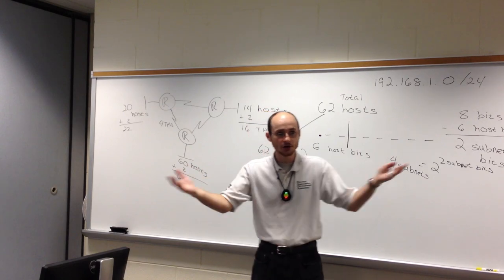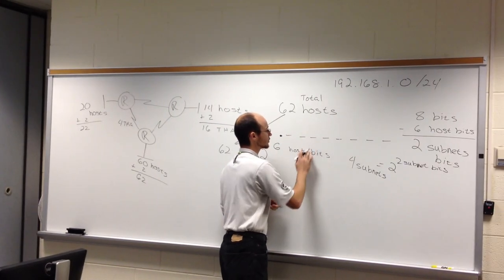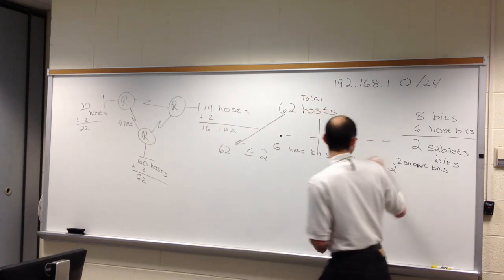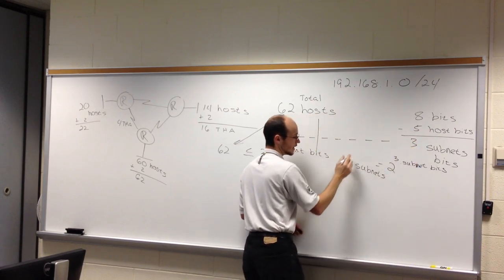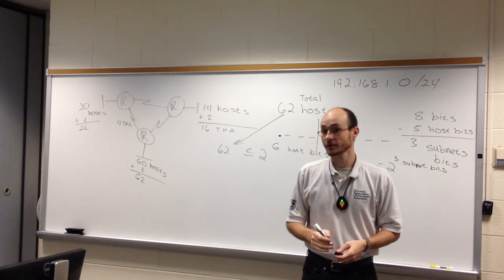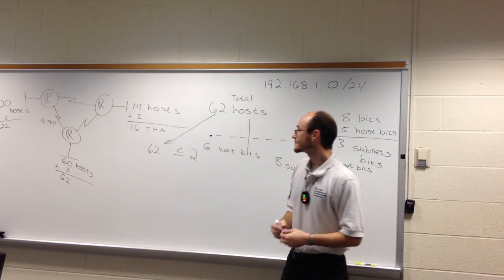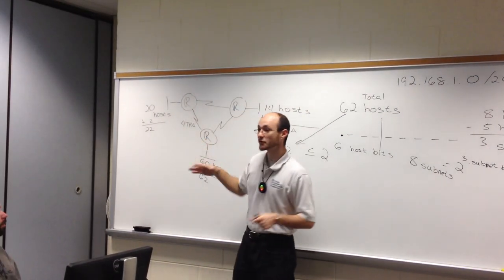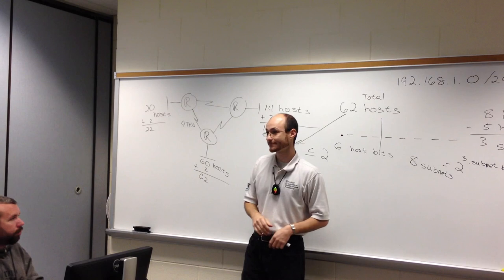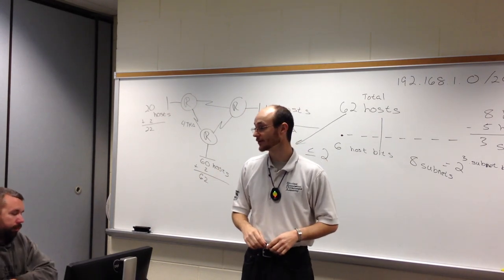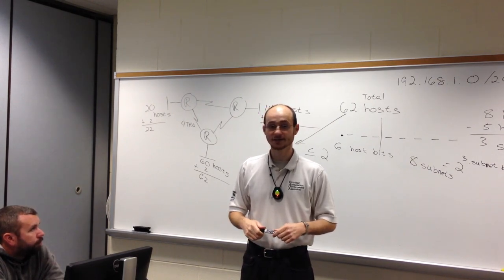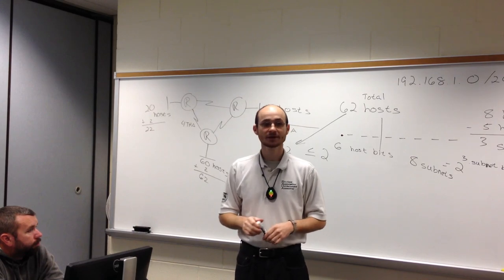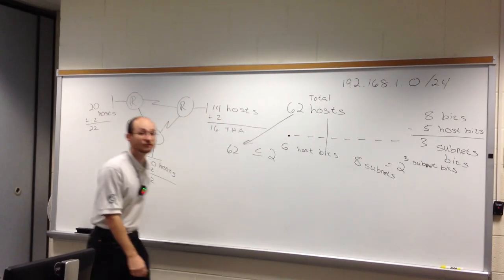If I borrow another bit and move the line over, I get three subnet bits — two raised to three equals eight subnets, more than enough for six. But now each subnet is only 32 hosts wide and can't accommodate the 62-host network. I can't just turn off half the servers each hour. So fixed-width subnetting doesn't work here — we need to use VLSM.